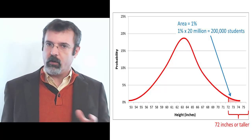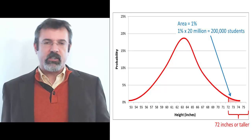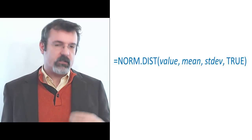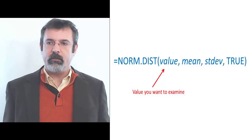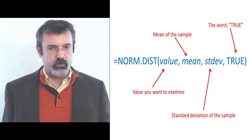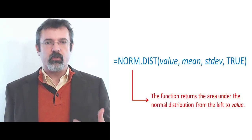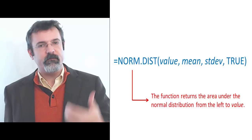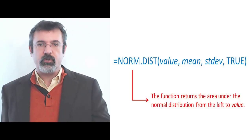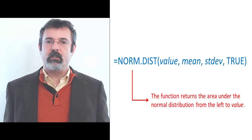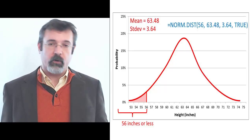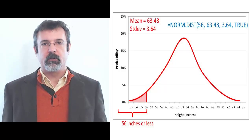How do we come up with these areas under the normal distribution? There's a function in Excel called NORM.DIST. NORM.DIST takes four arguments: the first is the value you want to examine (in this case, the height of the student); the second is the mean of the sample; the third is the standard deviation of the sample; and the fourth is simply the word TRUE. This function returns the area under the normal distribution from the left up to the value you're examining. For example, to find the area up to a height of 56 inches, you enter NORM.DIST, 56, 63.48, 3.64, TRUE.